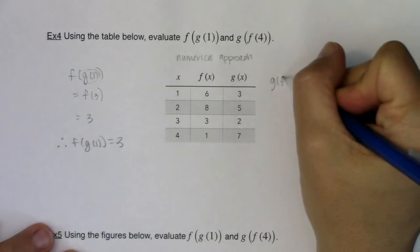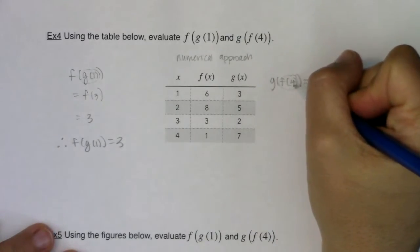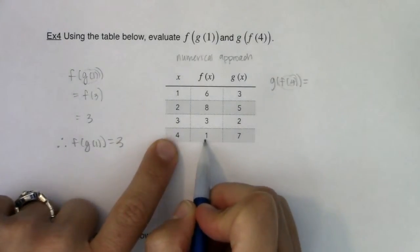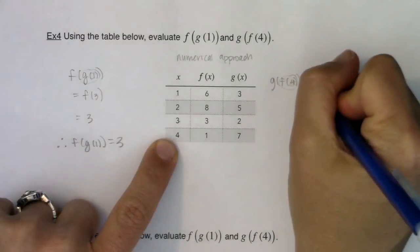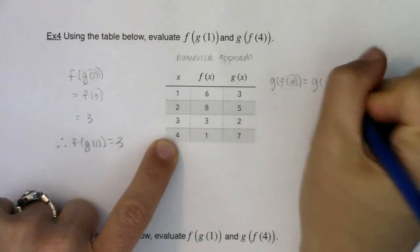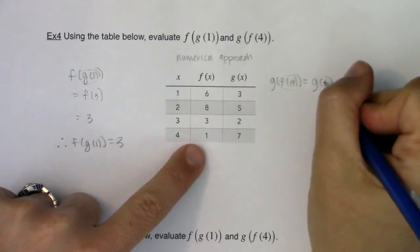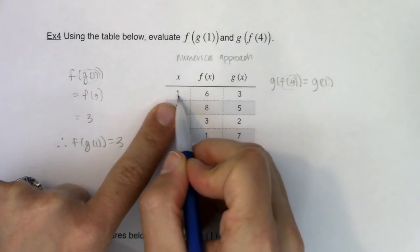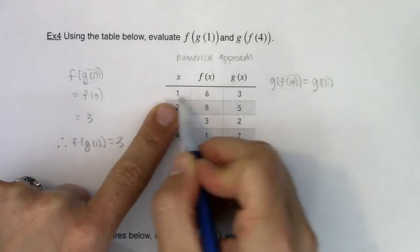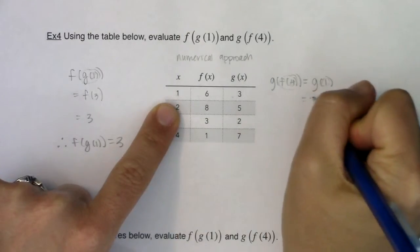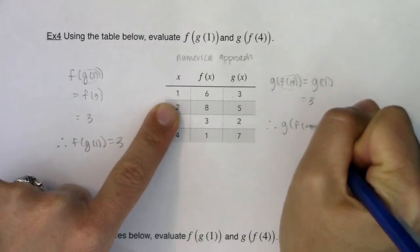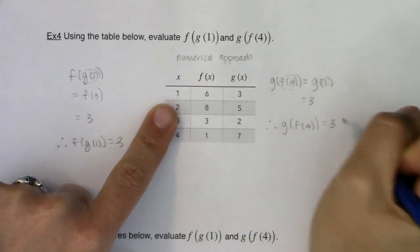All right so again my innermost parentheses, well my innermost is x equaling 4 but I want the f value there. So let's go to x equaling 4 and I would like the f value. So that looks like it's going to turn into g of 1 because f of 4 is 1. My new x value, my new input is 1. Let me go back up to the row with 1 on it and I would like the g value so that will ultimately give me 3. So here I would say g of f of 4 is equal to 3.